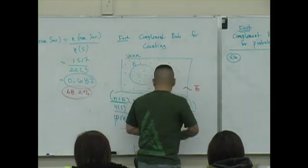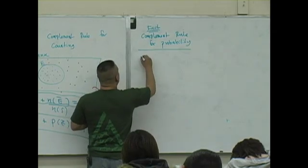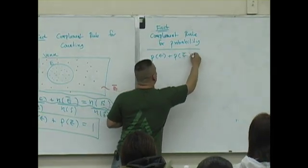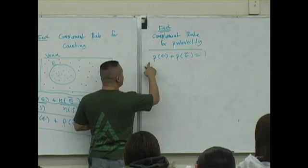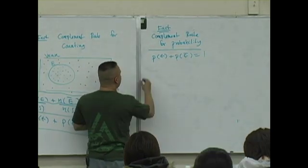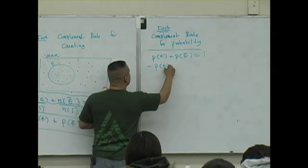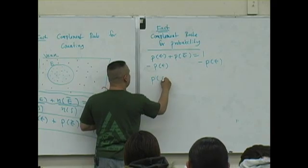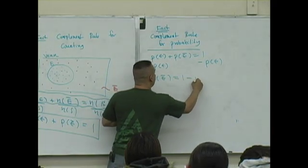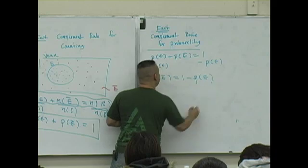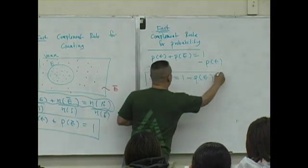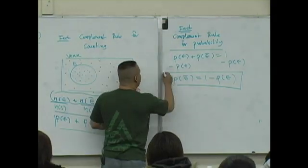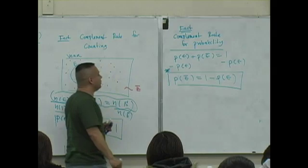The probability of an event plus the probability of its complement is 1. If I now subtract P of E from both sides, what I get is the probability of the complement of an event is 1 minus the probability of the event. I can use this relationship. This is probably the most useful form or the one that you'll directly use.